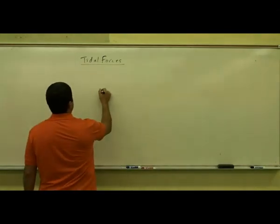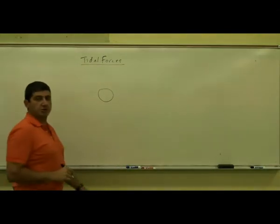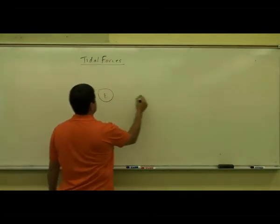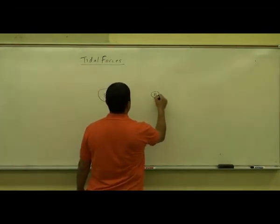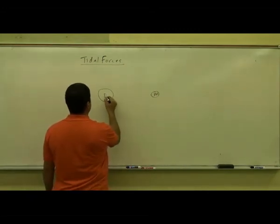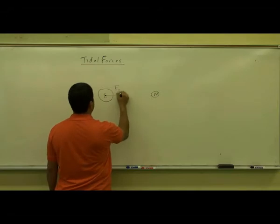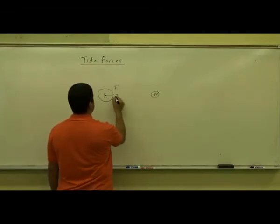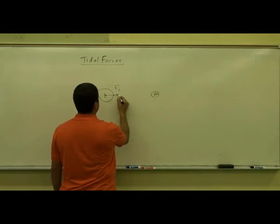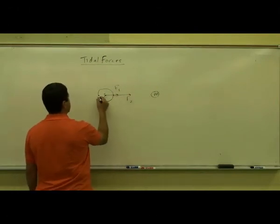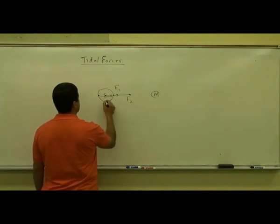Tidal force is a result of what we call in astronomy a differential force. So this is the earth, and here is the moon. The moon is attracting the center of the earth with a certain force, F1. The moon is attracting the front side of the earth with a certain force, F2. The moon is attracting the back side of the earth with a certain force, F3.